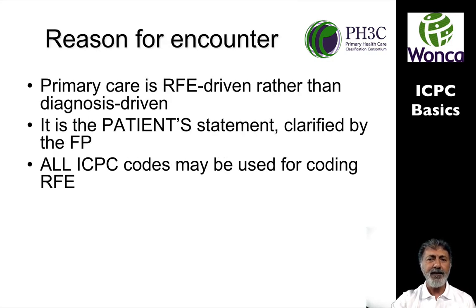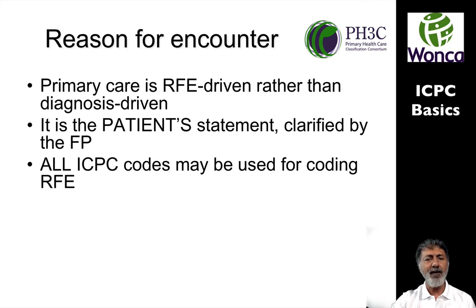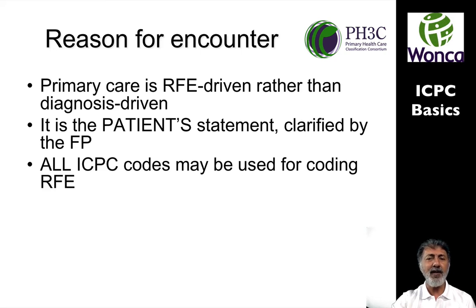The reason for encounter is an important element to code for, because in primary care the reason for encounter is often more about the way we manage than necessarily getting a diagnosis. It's important that we code for the patient statement — maybe clarified by the family physician — but it's the patient statement, not what the family physician picks up by way of history taking. A patient may come in saying they have a symptom, want something done (a process code), or may say they have diabetes as a diagnostic label — that can all be a reason for encounter.